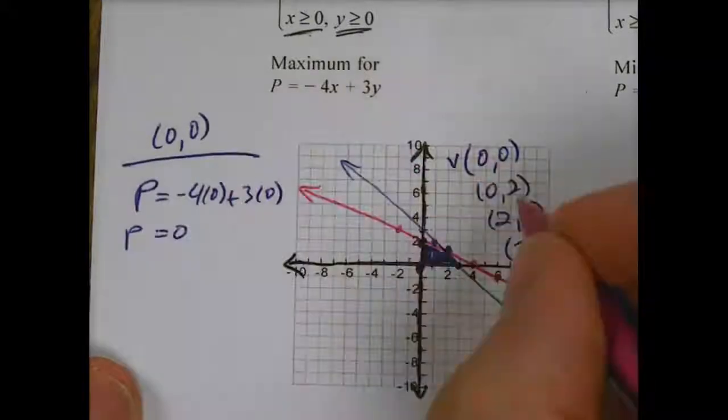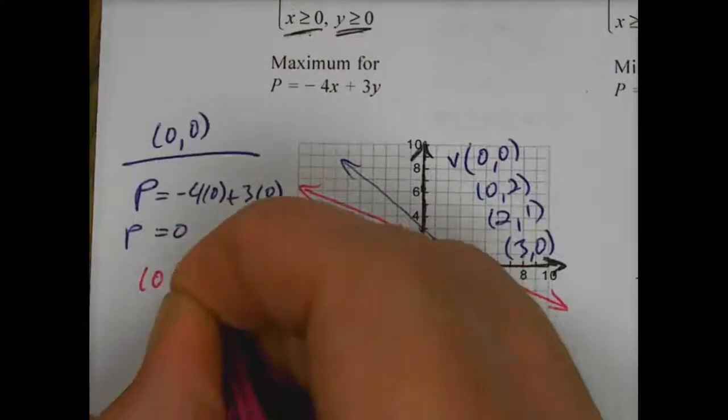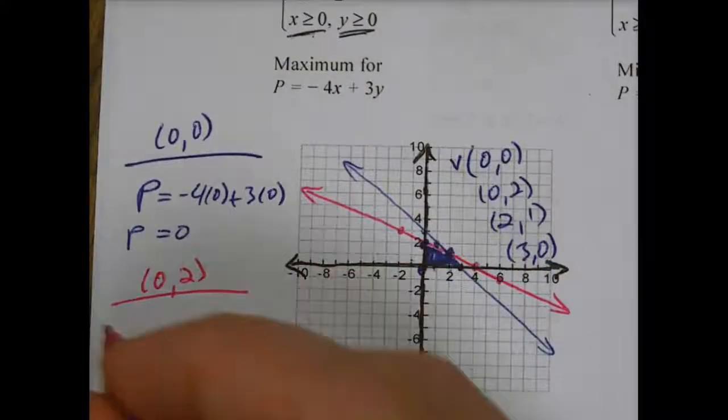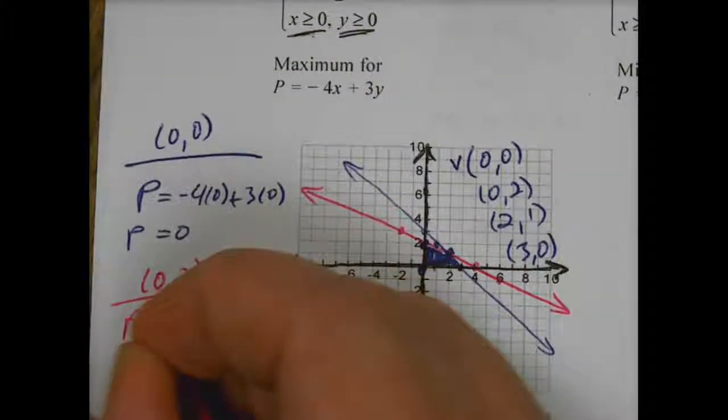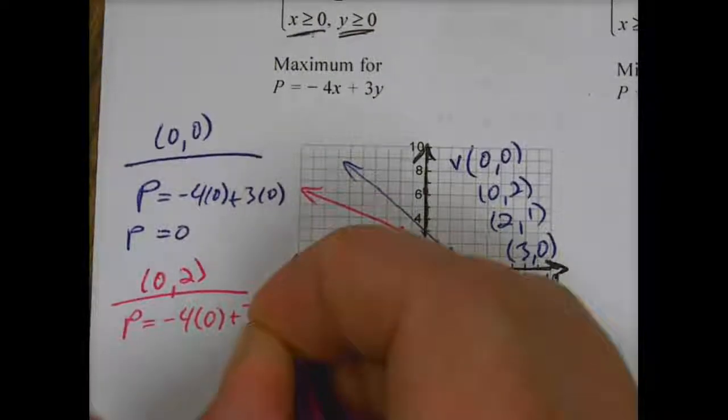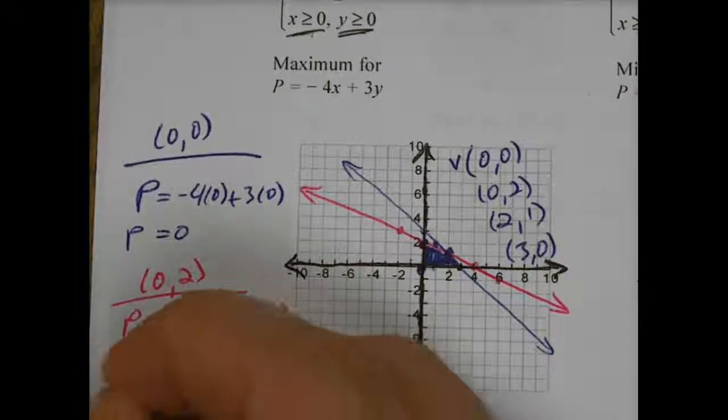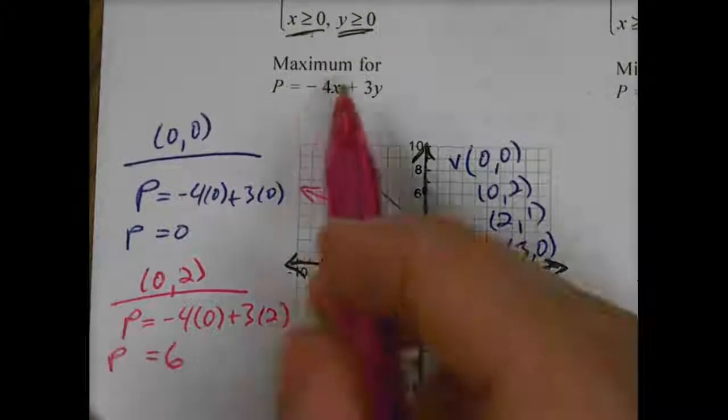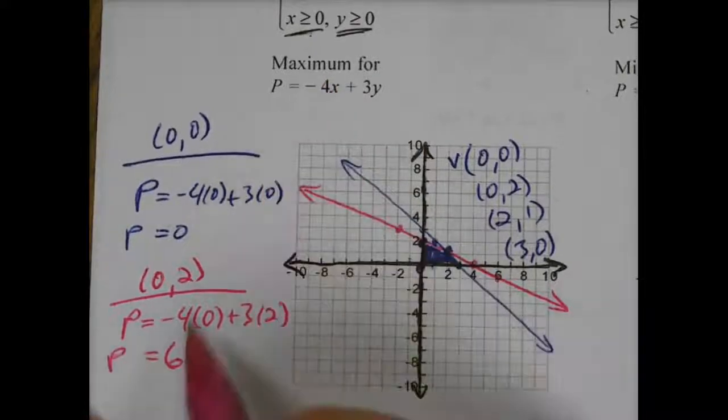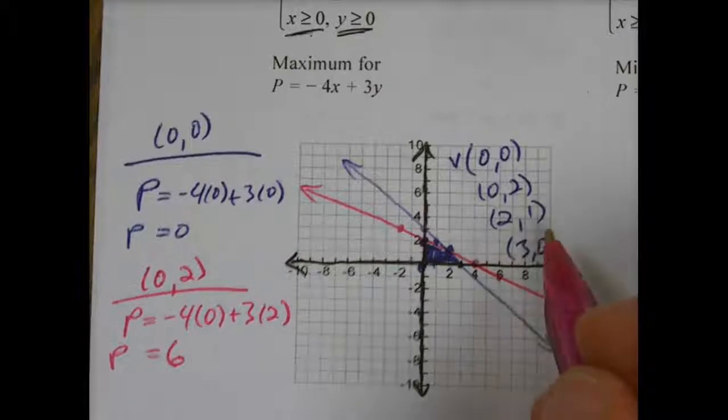We can do the same thing when my vertex is 0, 2. That's a whole different point, so I'll have a different P value, a different objective function value. So if I have P to be equal to negative 4 times 0 plus 3 times 2, this will yield 0 plus 6, which is 6. Well, that's bigger than that one. We're trying to find the maximum in this one, so P would be 6 there. Well, that's bigger than 0, but I still have two more points I need to check.